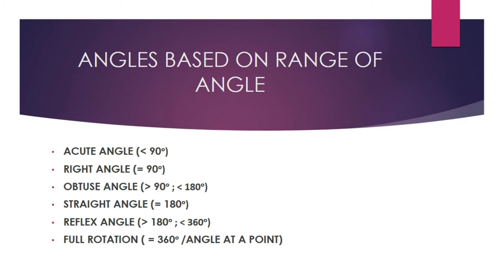Angles based on range: we have the acute angle, which is less than 90 degrees; the right angle, which equals 90 degrees; the obtuse angle, which is greater than 90 but less than 180 degrees; the straight angle, which is a straight line at 180 degrees; and the reflex angle, which is greater than 180 degrees but less than 360 degrees.